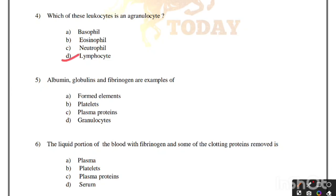Albumin, globulins and fibrinogen are examples of formed elements, platelets, plasma proteins, or granulocytes. Correct answer is option C, plasma proteins. The liquid portion of the blood with fibrinogen and some clotting proteins removed is plasma, platelets, plasma proteins, or serum. Correct answer is option D, serum.